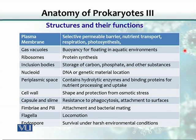Gas vacuoles are found in certain bacteria that live in water, in seas and ponds. Those that need light have evolved with these gas vacuoles, which keep them floating at a level where light is available for nutrition.